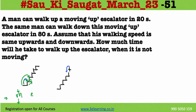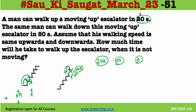Write everything in terms of time. One second of man's distance is M; escalator's distance is E. So in 20 seconds, man covers 20M and escalator covers 20E. In 80 seconds, man traverses 80M and escalator traverses 80E.